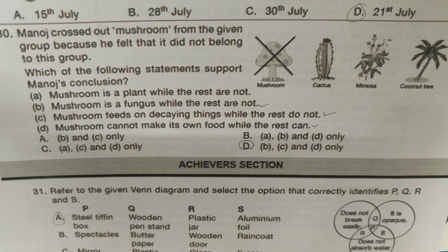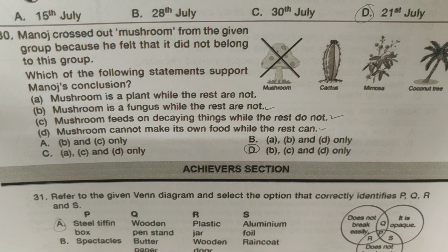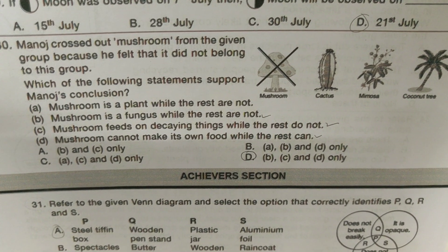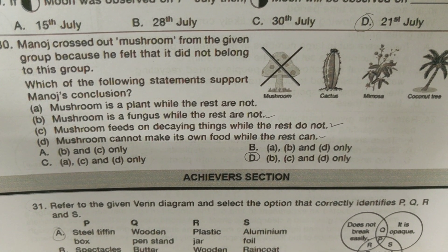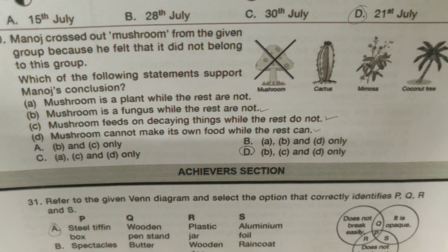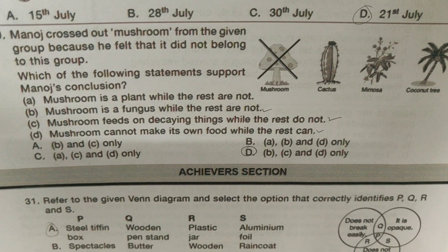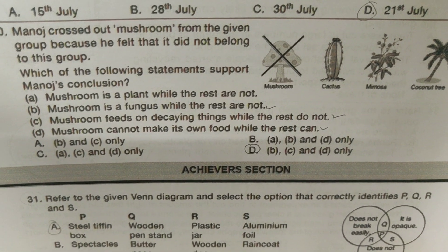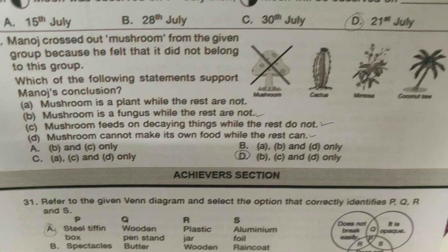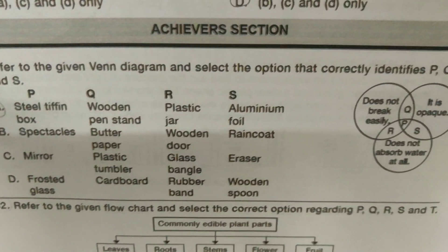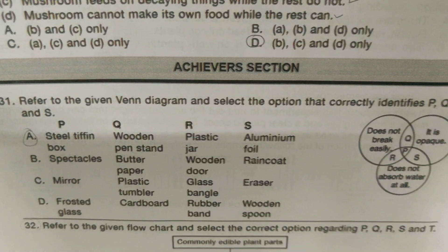Manoj crossed out mushroom from the given group because he felt it did not belong to this group. Which of the following students support Manoj's conclusion? It's B, C and B.